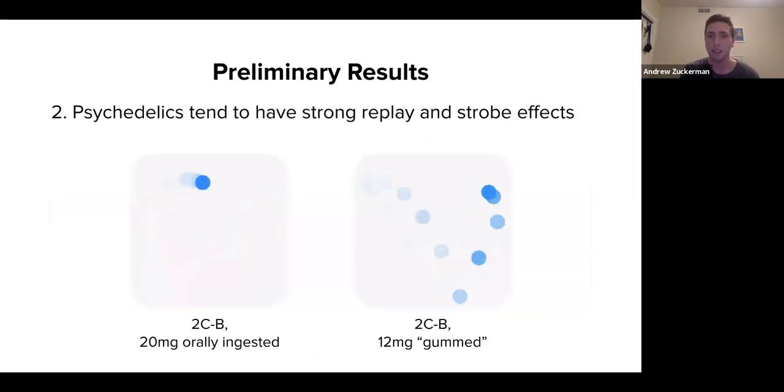A second outcome is that psychedelics tend to have these strong replay and strobe effects. This is 2CB in two different doses and two different methods of being ingested. And you can actually see what's interesting. The frequency of both of these data points are actually quite similar, which is starting evidence that maybe 2CB has a specific frequency.